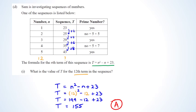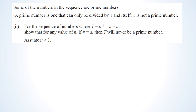Some numbers in this sequence are prime — a prime has only 1 and itself as factors. Note: 1 is not prime. 2, 3, 5, 7, 11 are prime; 4 and 9 are not. The formula uses t equals n squared minus n plus a. The question says if n equals a, then t will never be prime. Writing the equation with a substituted by n, I have t equals n squared minus n plus n.